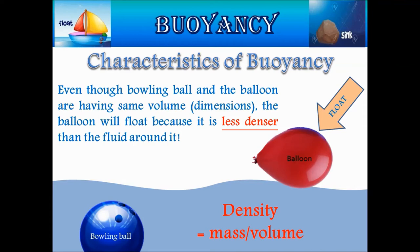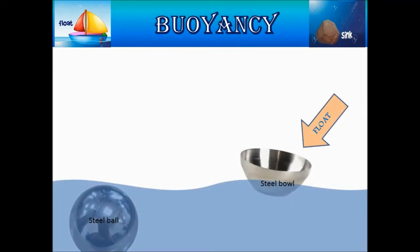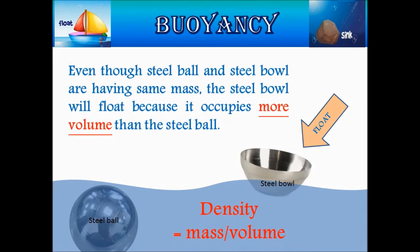So the balloon will float. Now let us consider a solid steel ball and a steel bowl made by deforming the same steel ball. If we immerse them in water, the steel bowl will float while the solid steel ball will sink. It is because the steel ball and the steel bowl have the same mass, but the volume occupied by the steel bowl is more than that of the steel ball. So the density of the steel bowl is less than the steel ball, and therefore the steel bowl will float on water.